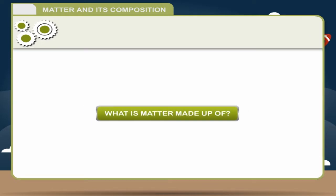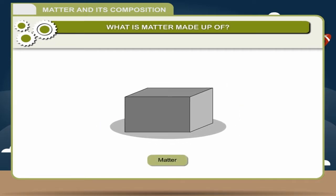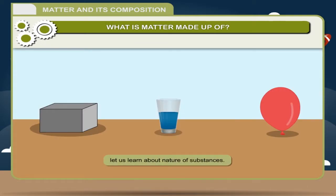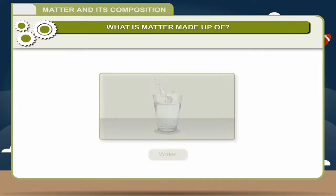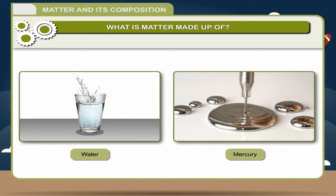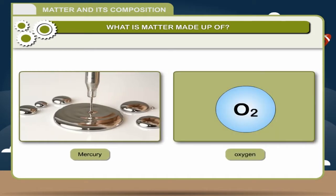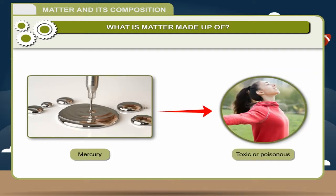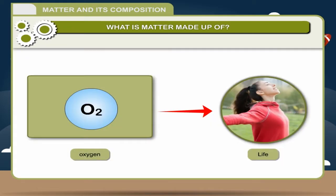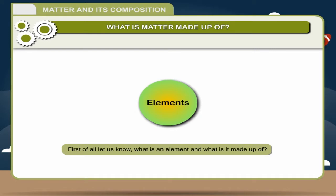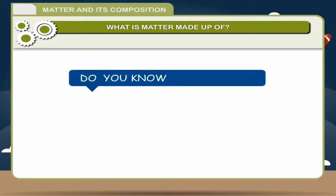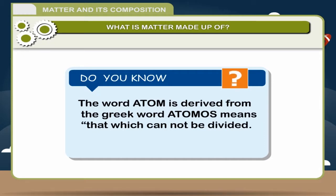What is matter made up of? After getting a general idea about matter and the various states in which it exists, let us learn about nature of substances. For example, water and mercury exist in liquid state, but their chemical composition is different. Mercury is an element and water is a compound. Mercury as well as oxygen are elements, but they are so different from each other that while mercury is toxic or poisonous in nature, oxygen is life-giving. The word atom is derived from the Greek word atomos, means that which cannot be divided.